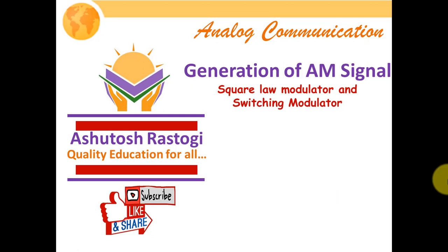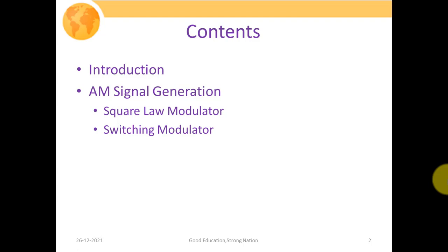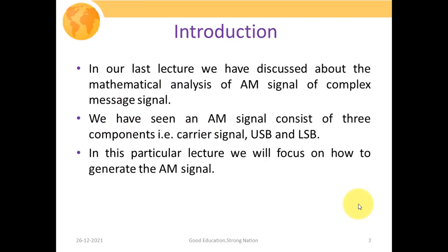Today in this particular lecture, we're going to discuss about the various generation mechanisms of your AM signal, such as your square law modulator and your switching modulator. We're going to start with an introduction, then discuss various AM generation mechanisms — first the square law modulator and then the switching modulator. In our last lecture, we discussed the mathematical analysis of your AM signal for a complex or multitonic message signal.